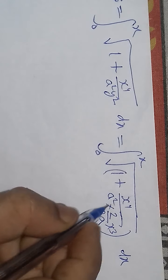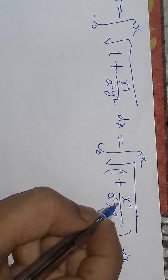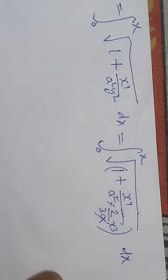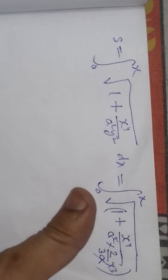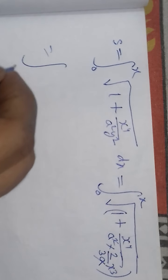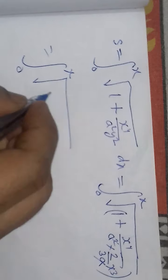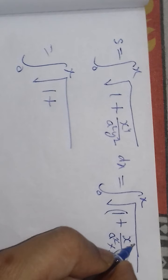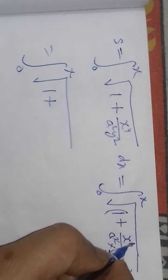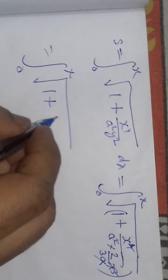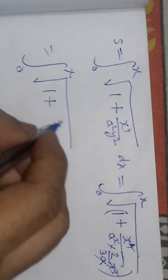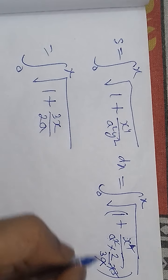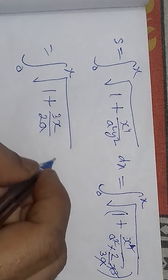We notice that 'a' from the denominator cancels with 'a' in the expression. The 3 in the denominator multiplies through. After simplification, the limit remains 0 to x, and we are left with 1 + (3x)/(2a) under the square root, multiplied by dx.